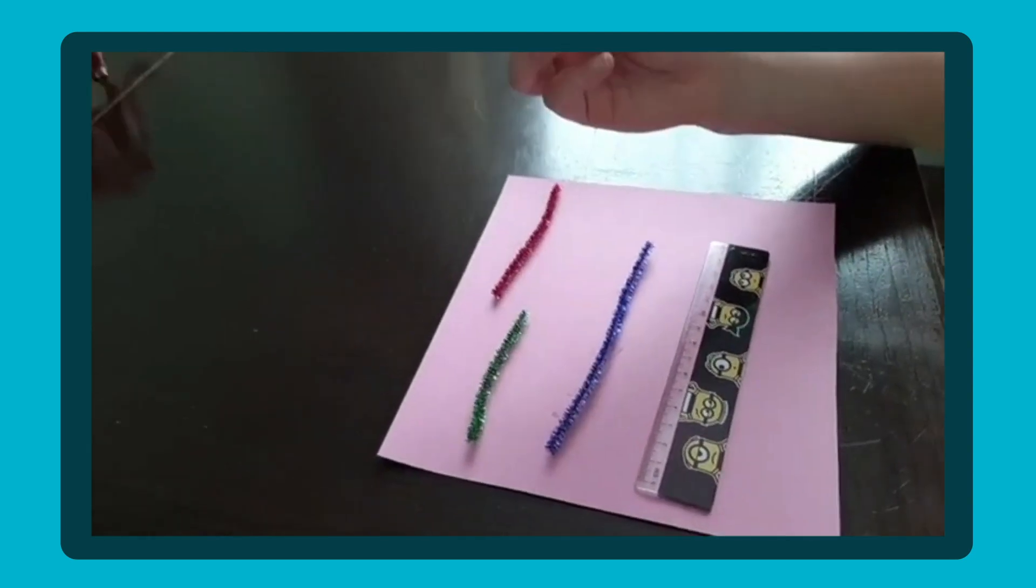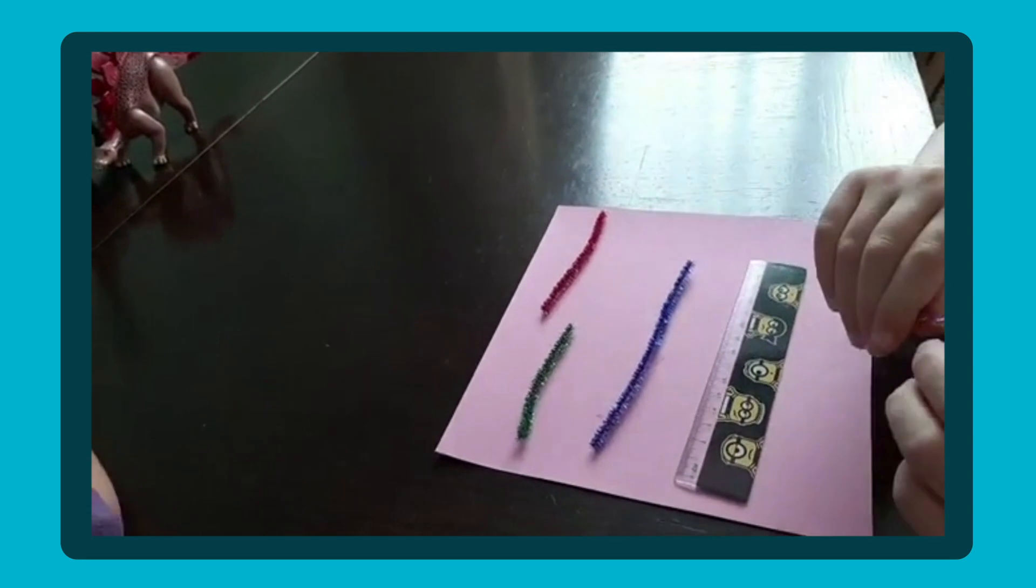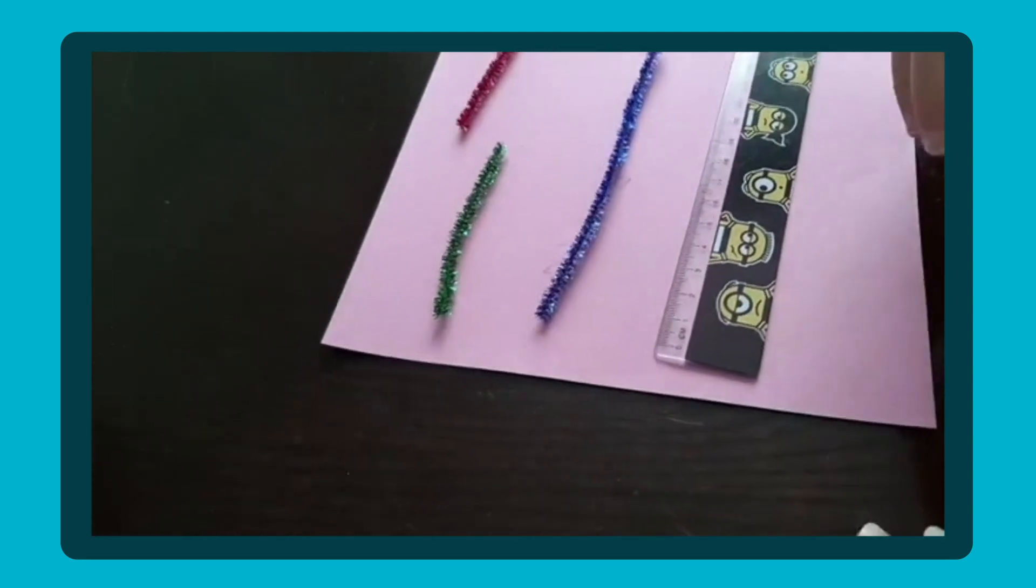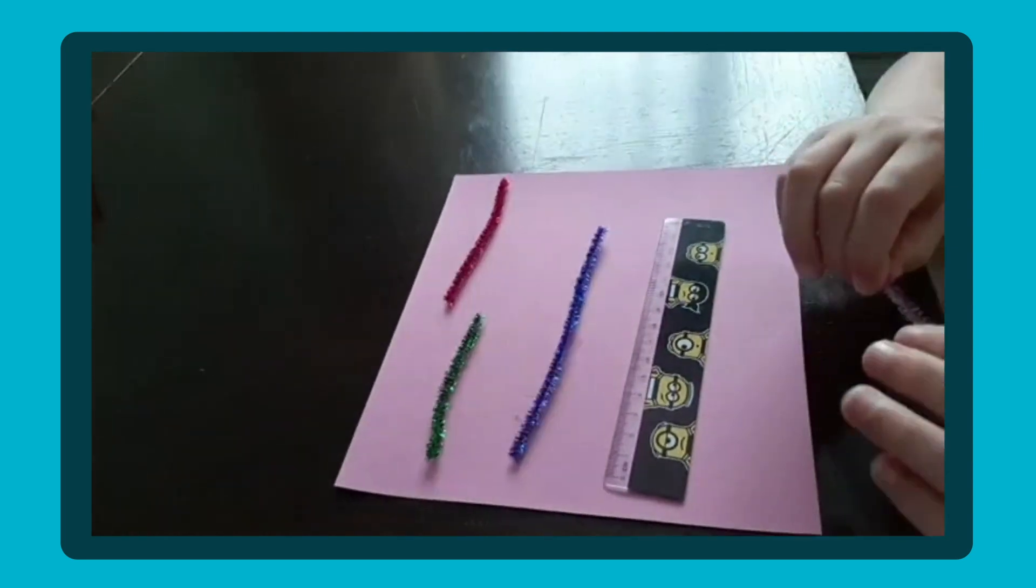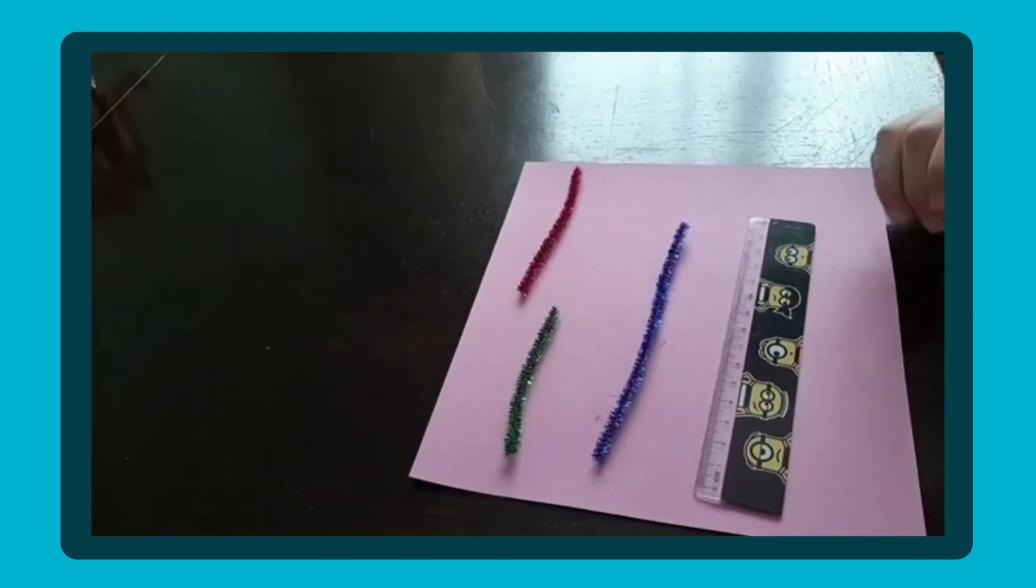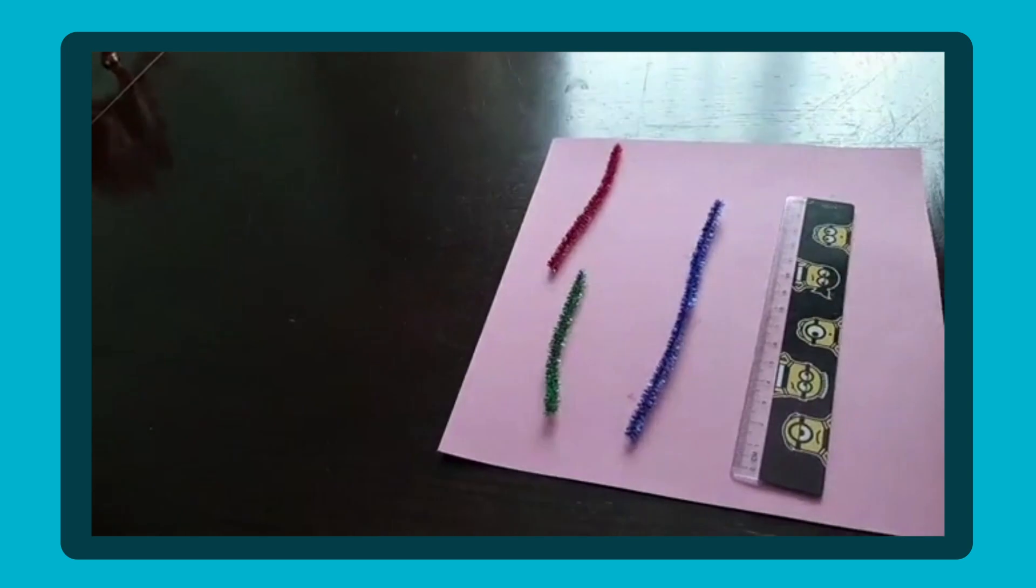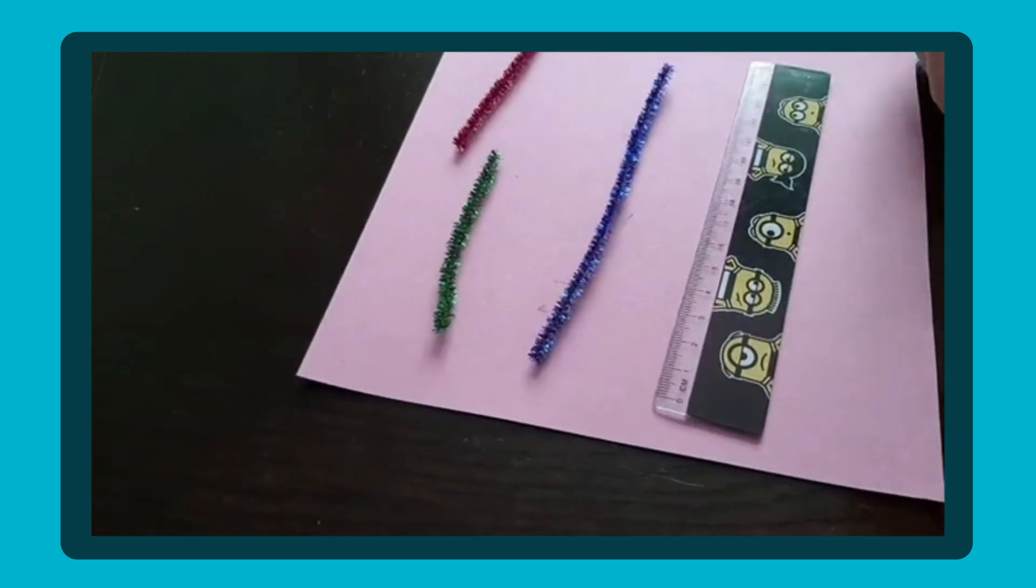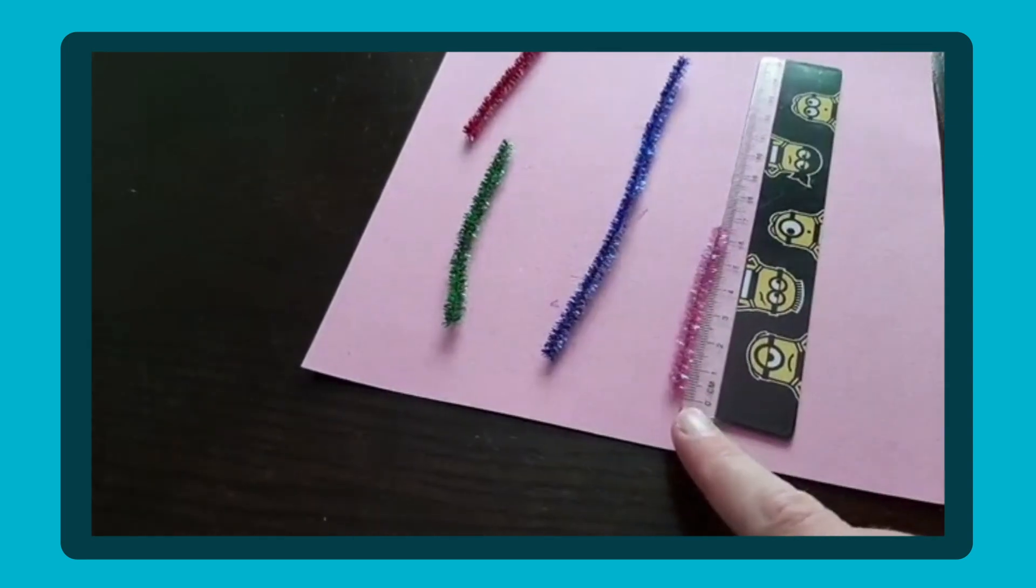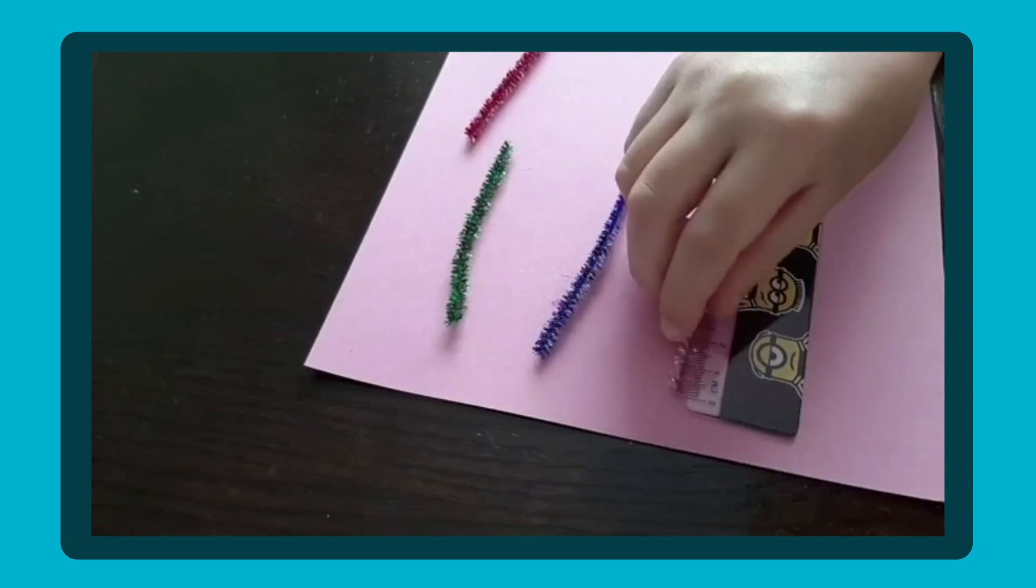So Noah, which wiggly worm do you want to measure first? You want to measure that one? Why that one? Because it's the smallest. So just getting that language in as well. Okay, well you've got two that look a bit similar in size as well. So shall we measure your little one? Start it at zero. That's it, the sentence. Put it to zero because we're not quite at zero yet, are we? You might need to use both hands.